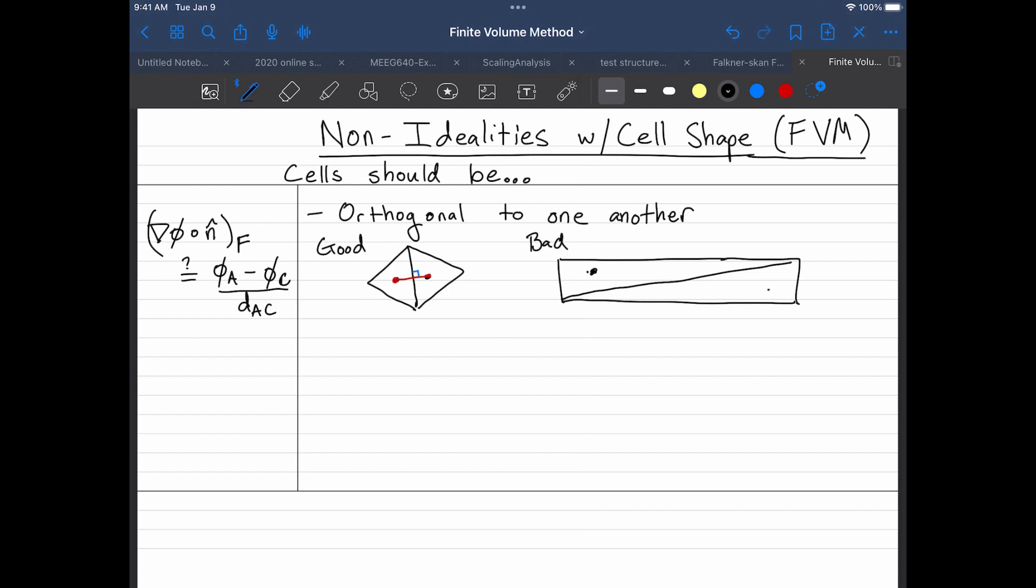You generate the gradient or the approximation of the gradient along this line, and in that case you're not generating it in this direction, which was the direction you actually wanted. So this angle is then not orthogonal and is not providing you the correct gradient in the correct direction. This would be n-hat, for example. What are some other problems that can come up?